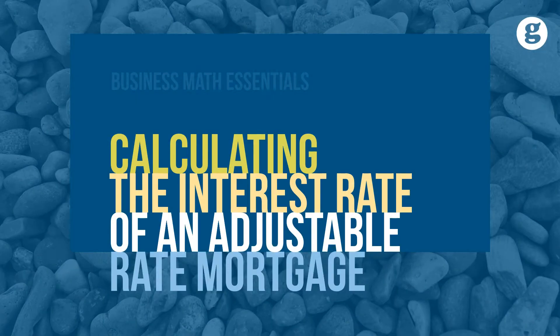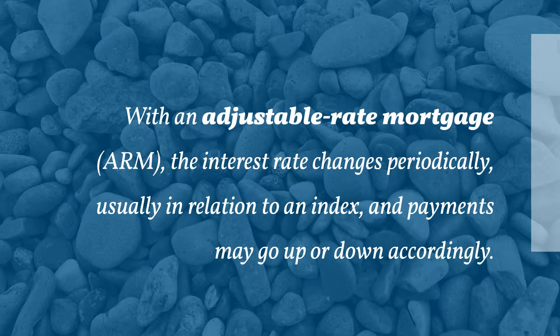With a fixed rate mortgage, the interest rate stays the same during the life of a loan. Let's take a look at calculating the interest rate of an adjustable rate mortgage. With an adjustable rate mortgage, known as an ARM,